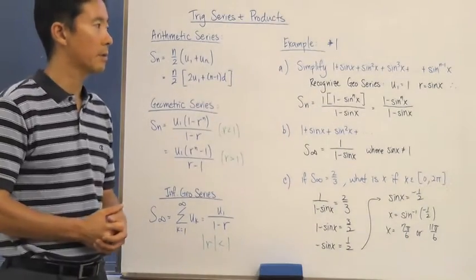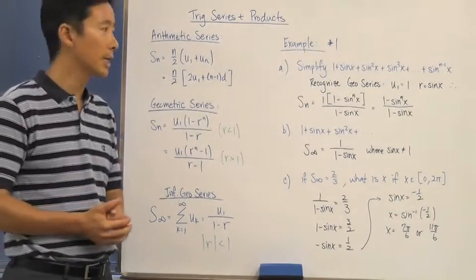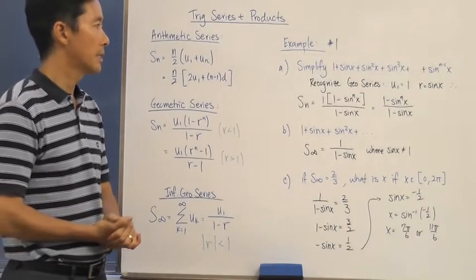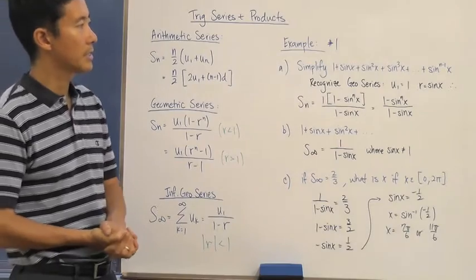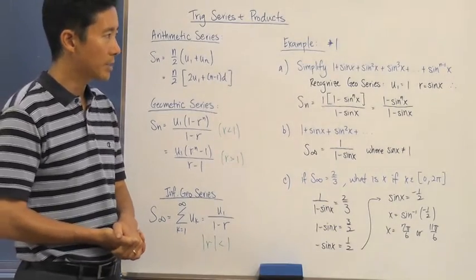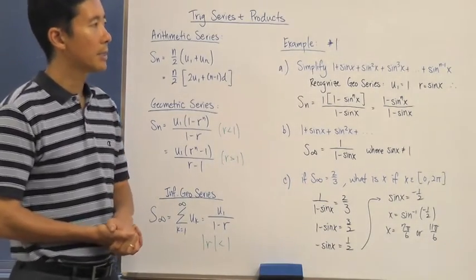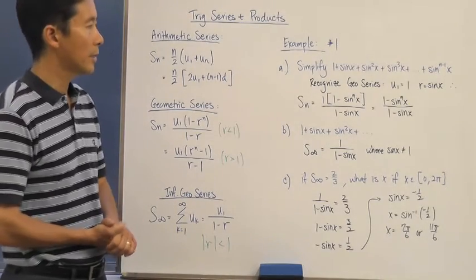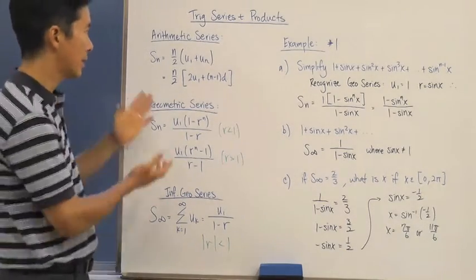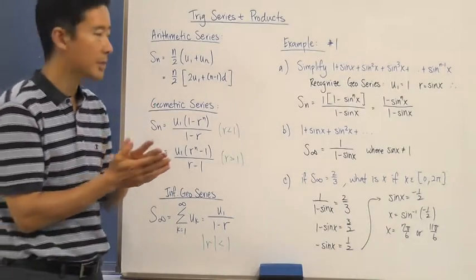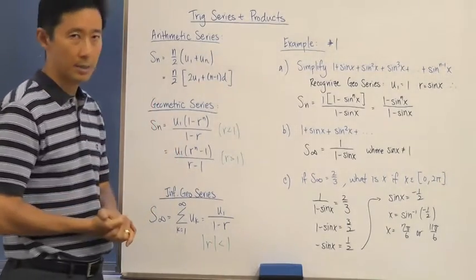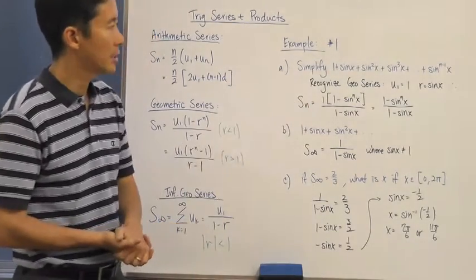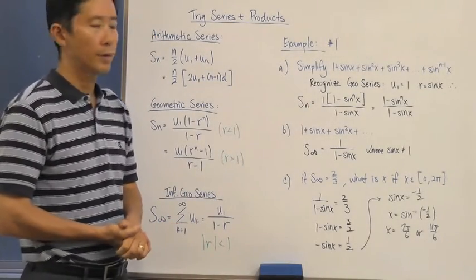So let's just take a look at an example of what these two problems are going to look like. And here's example number one taken directly from the book. It says simplify 1 plus sine x plus sine squared x plus sine cubed x plus dot dot dot plus sine to the n minus 1 x. So the one thing that we need to do again is recognize, is this an arithmetic series or is this a geometric series? And we can just tell by inspection that this is going to be a geometric series with the first term being equal to 1 and r being equal to sine x.